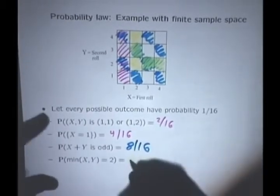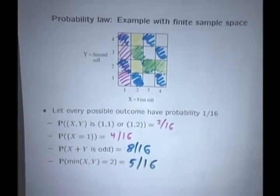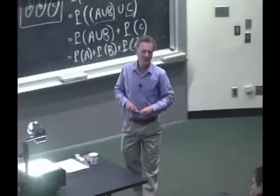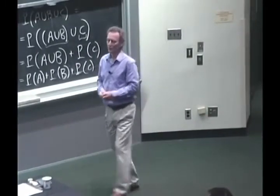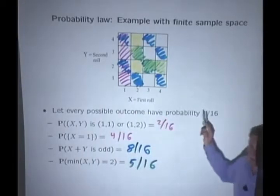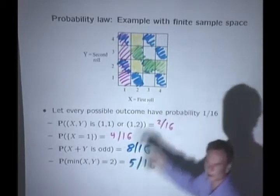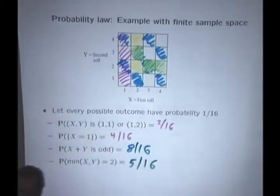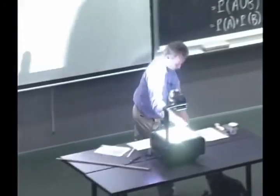But the procedure that we followed in this example actually applies to any probability model you might ever encounter. You set up your sample space, you make a statement that describes the probability law over that sample space. Then somebody asks you questions about various events. You go to your pictures, identify those events, pin them down, and then start counting and calculating the total probability for those outcomes that you are considering.